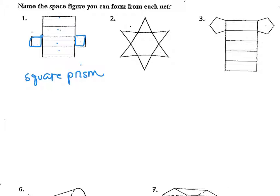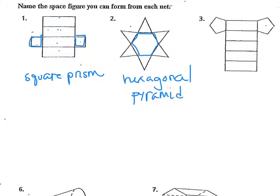And number two — in the middle, you can see the base here has six sides, so this is a hexagonal pyramid, since there's only one base. And again, the remaining faces are triangles.